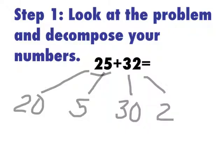So now that I have decomposed these numbers, I now know that I have two tens, five ones, three tens, and two ones. So when I set up my number line, I can choose to start with either 25 or 32. I'm going to start with 25.